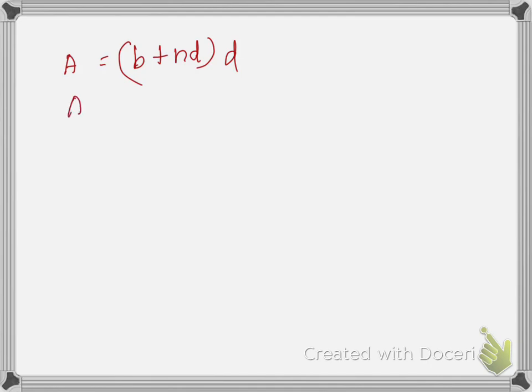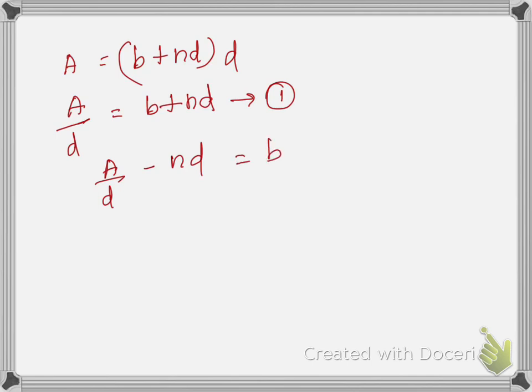Rearranging gives A/D = B + nD (equation 1). Solving for B: B = A/D − nD (equation 2). This expression for B will be substituted into the wetted perimeter formula.